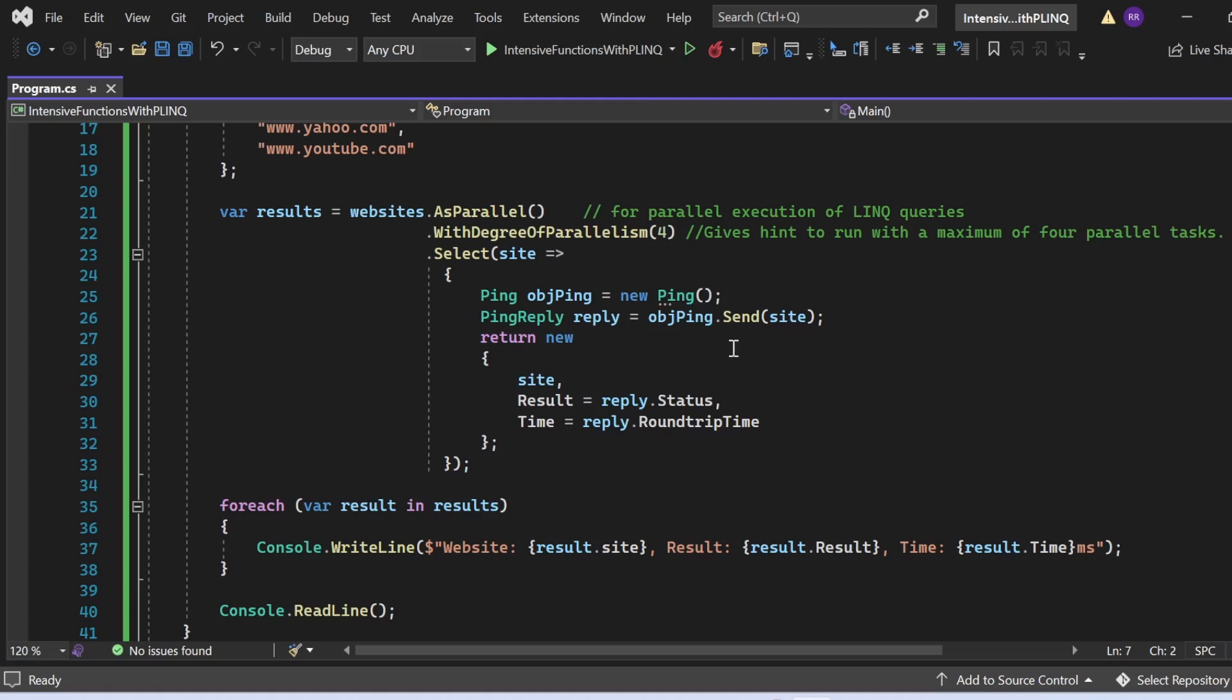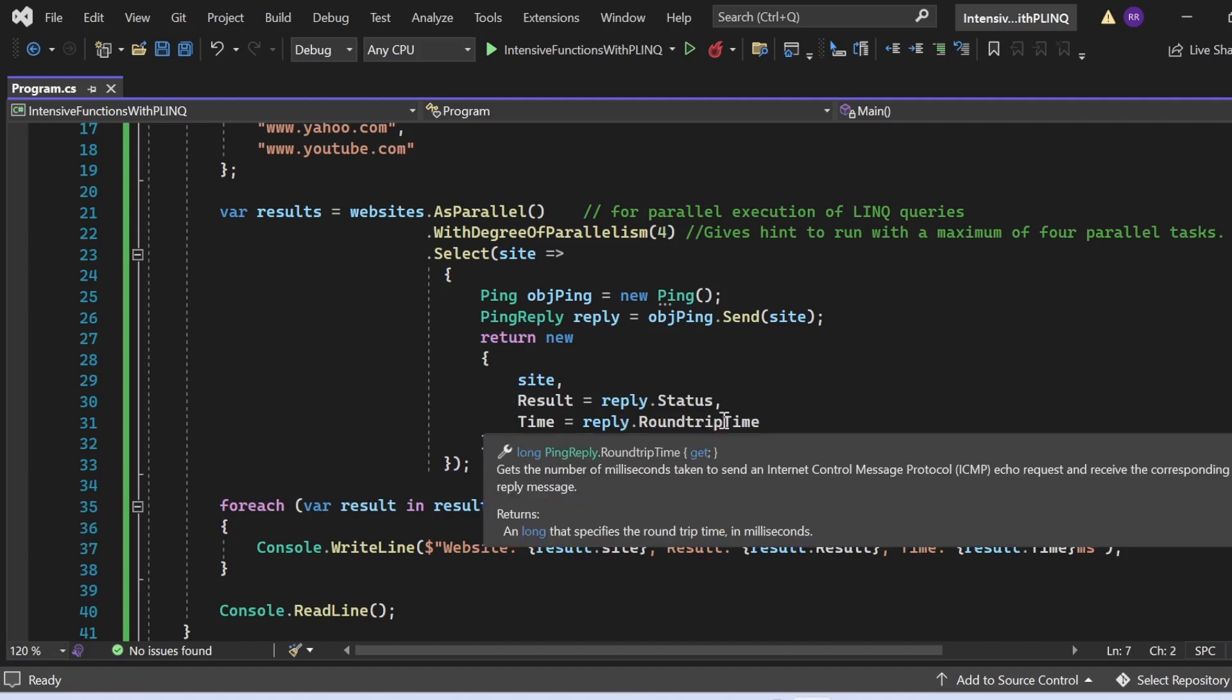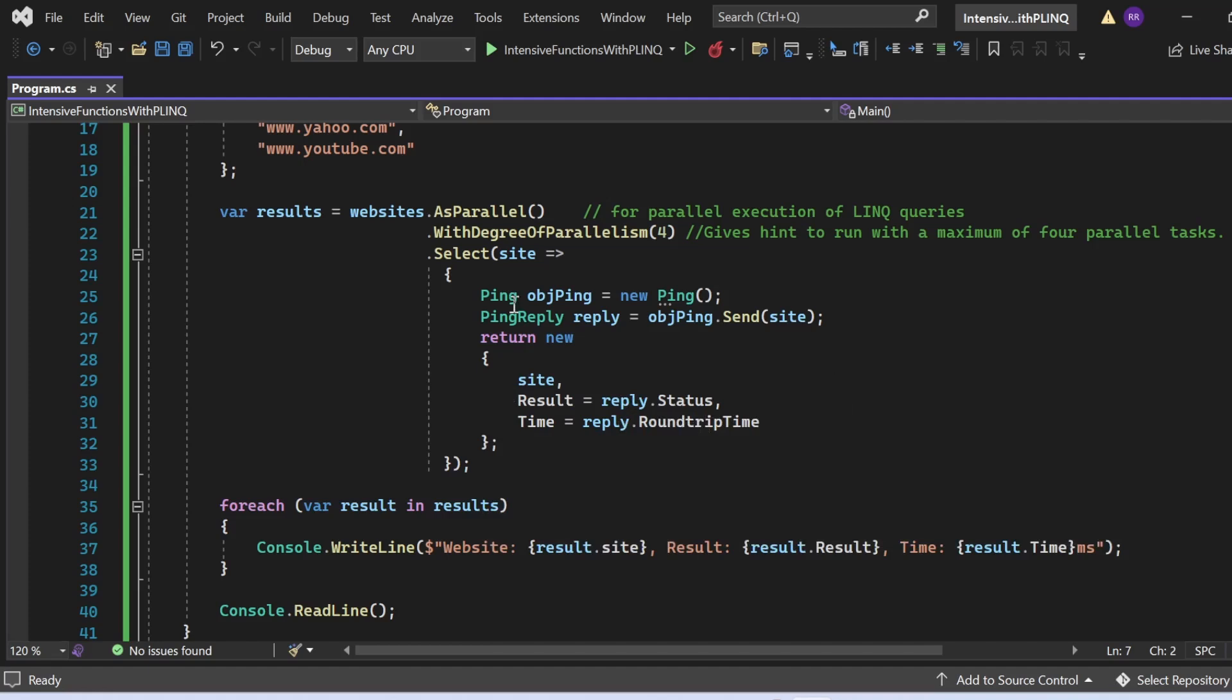Whatever response we are going to get, we are storing into the PingReply. Then there is an anonymous type I have created where I am including Site, reply.Status, reply.RoundtripTime. All those things are going to get returned. The whole query I am storing in this results variable.